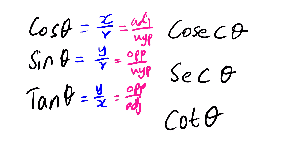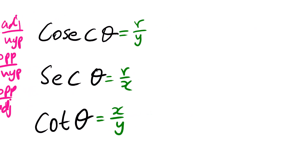Now what about the other three trig ratios — cosec, sec, and cot? Cosec is the inverse of sine, so this is r over y. And then sec is r over x. And then cot is x over y. Now how do you memorize this? Let me move to another page to explain.